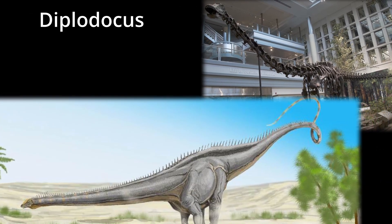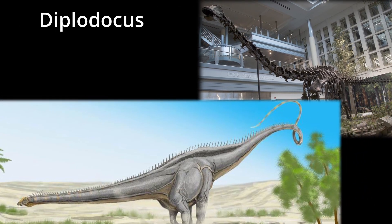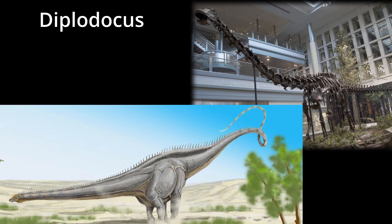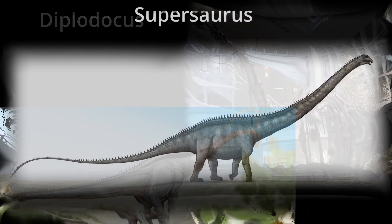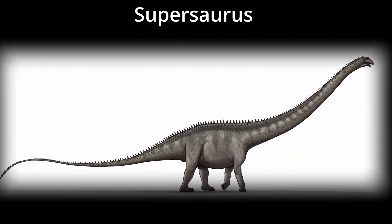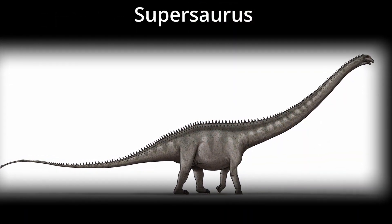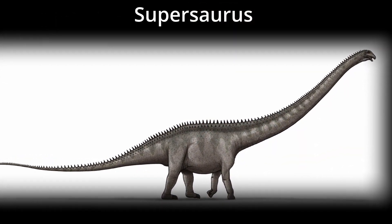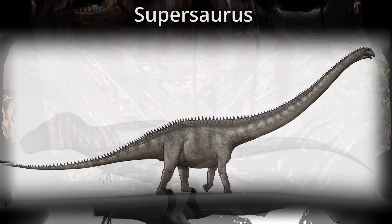Very large sauropod examples come to us from the late Jurassic. Among others, there's Diplocatus, and then there's the even larger Suprasaurus, who reached over 100 feet long and weighed over 35 tons.